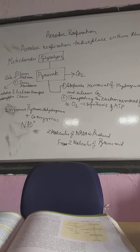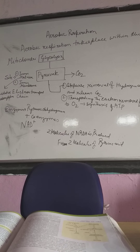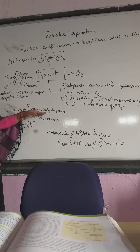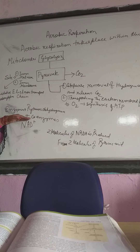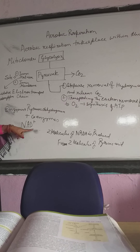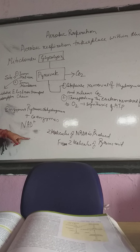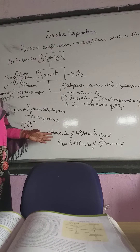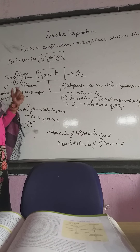Why is it called decarboxylation? Because carbon dioxide is removed from glucose — that is oxidative decarboxylation. During this process, the enzyme involved is pyruvate dehydrogenase, along with acetyl coenzyme A and NAD. NAD is reduced to NADH, and from two molecules of pyruvate acid we get two molecules of NADH.